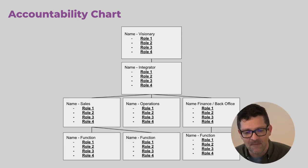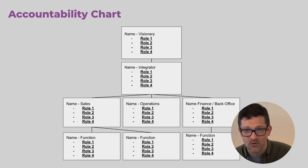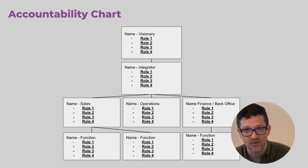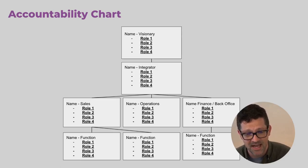What's different about the accountability chart versus most org charts is that there are actually specific roles that each person has — between three or four roles, not more than that, in each box. That really helps you focus on what this person is 100% accountable for. They might have other people that help them with those things, but they are accountable to make sure that specific thing is done.